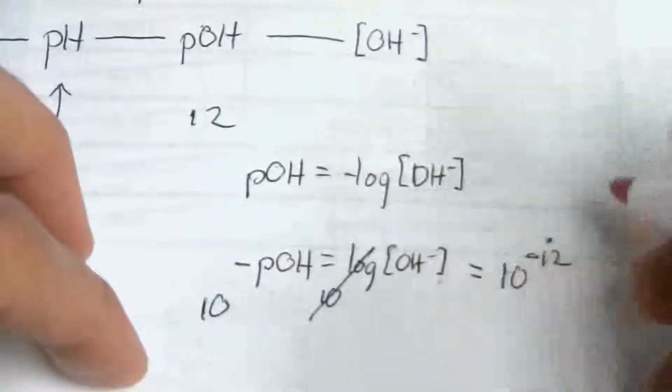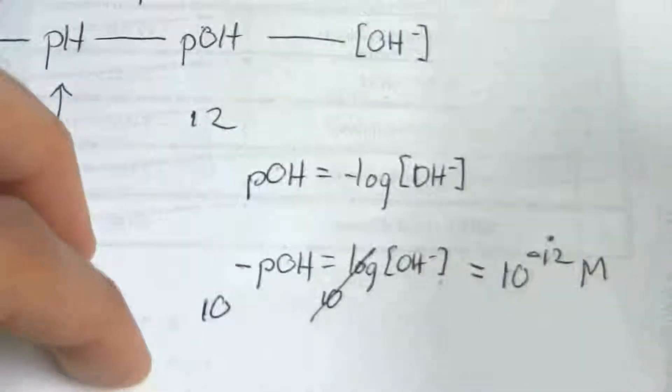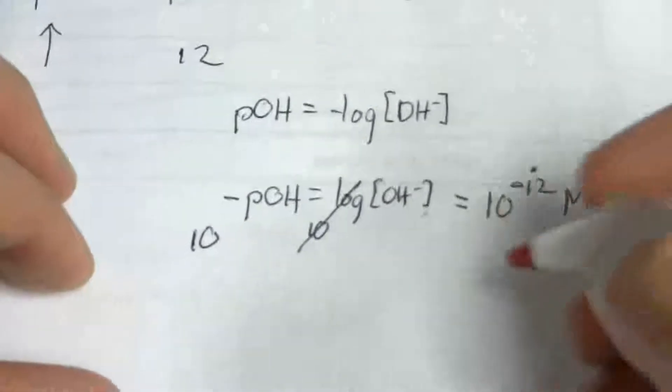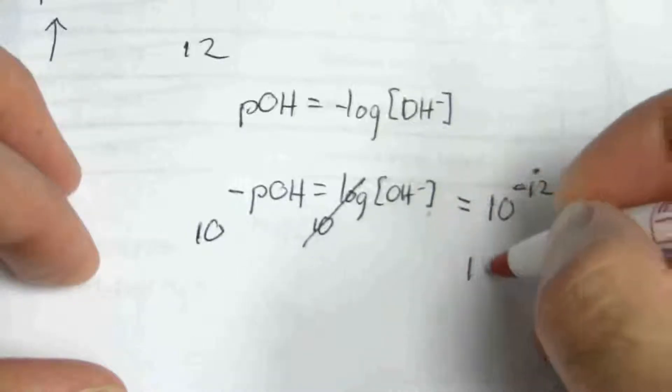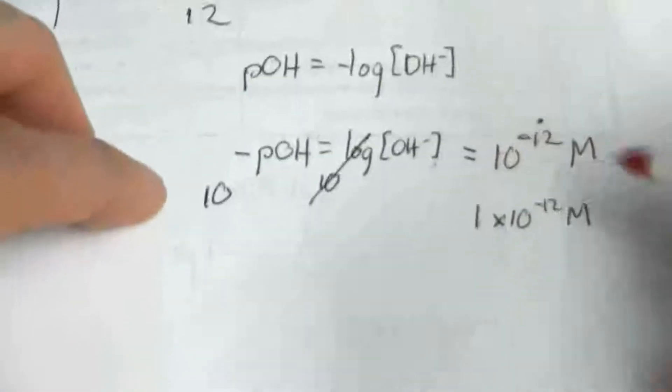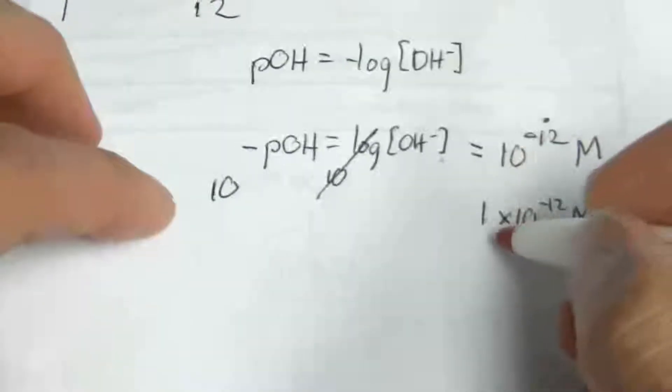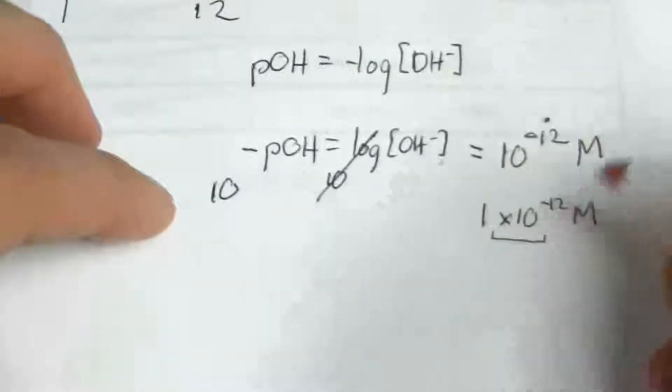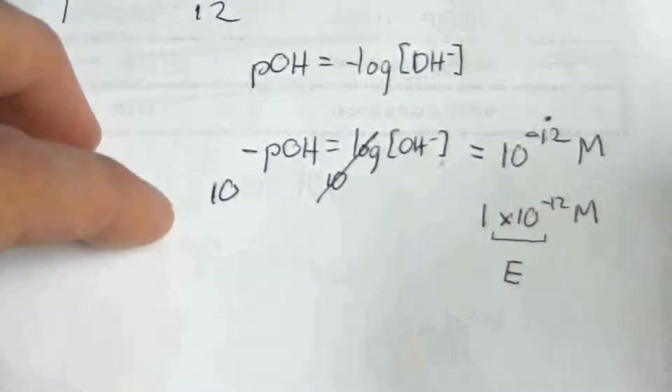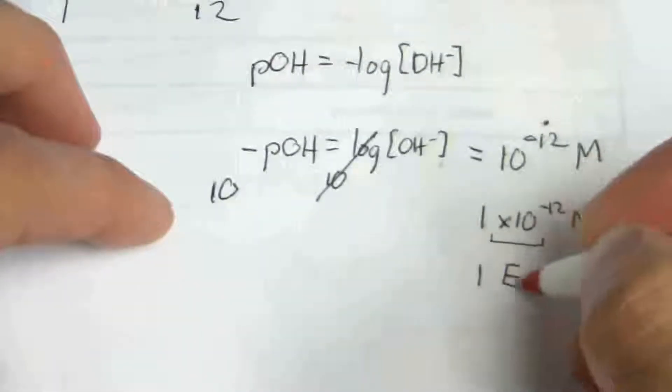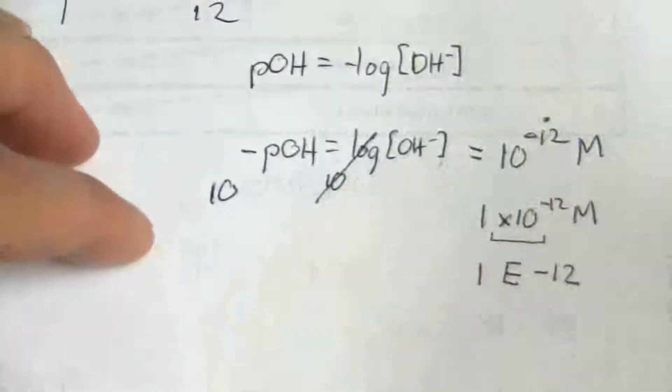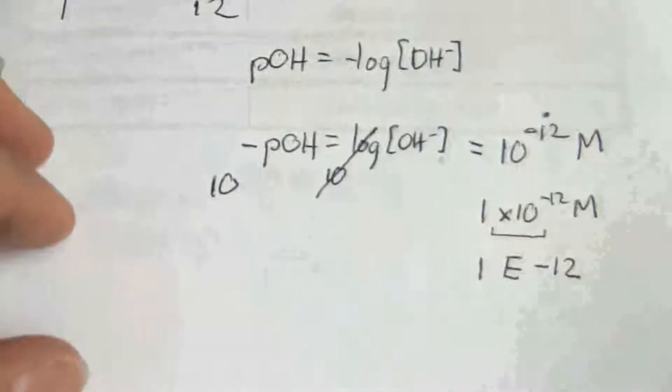The brackets mean concentration in molarity. So 10 to the minus 12 molarity, or we could say it's 1 times 10 to the minus 12 molar. I write it like this because the times 10 to the power of in the computer is represented by an e. So 1 e to the minus 12 is how we're going to put that in to the computer.